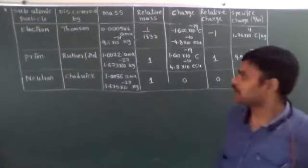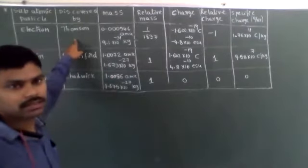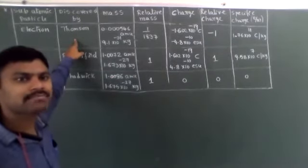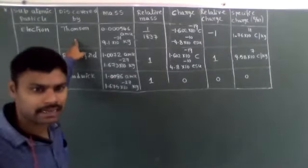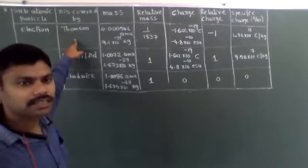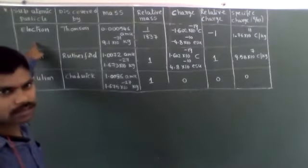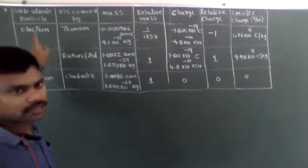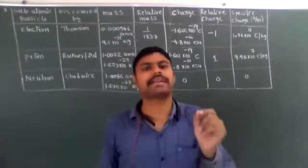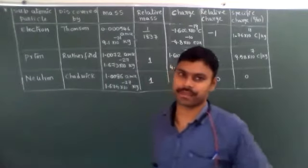The electrons are discovered by J.J. Thomson. Electrons are negatively charged particles - the negatively charged particles are called electrons. The electron name was suggested by J.J. Stoney.